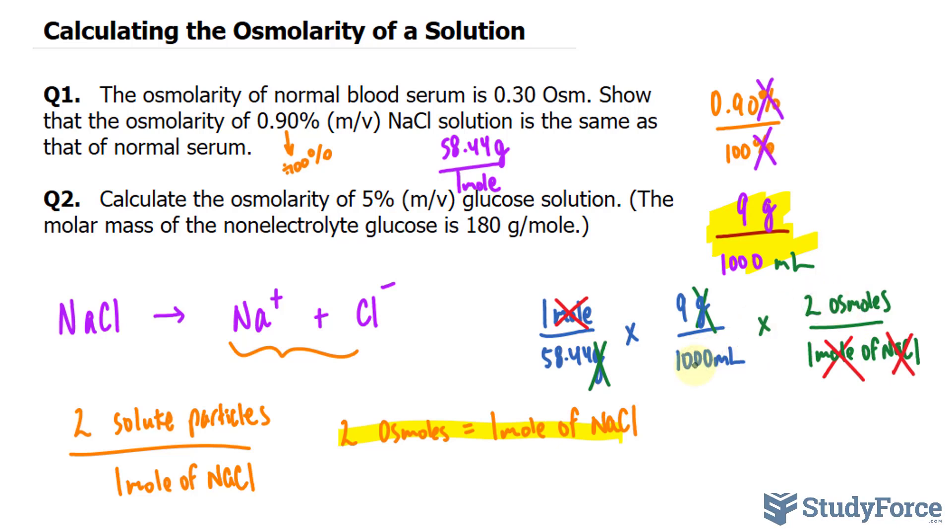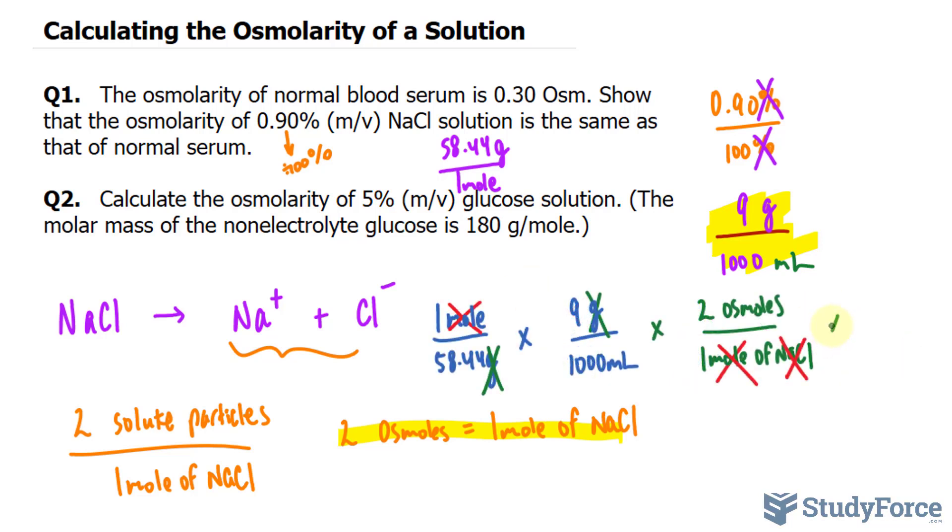And one last thing that I forgot to mention is that osmolarity is osmoles per liter. So our final conversion needs to be from milliliters to liters, where I have 1,000 milliliters per every 1 liter.